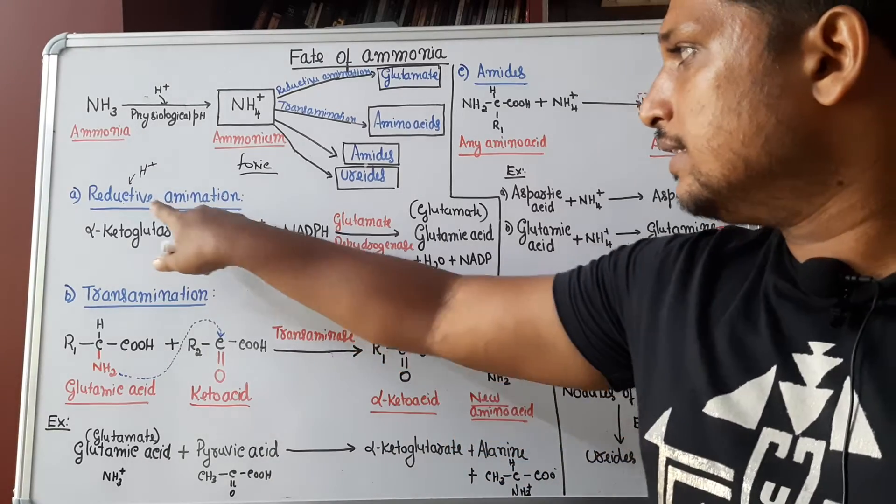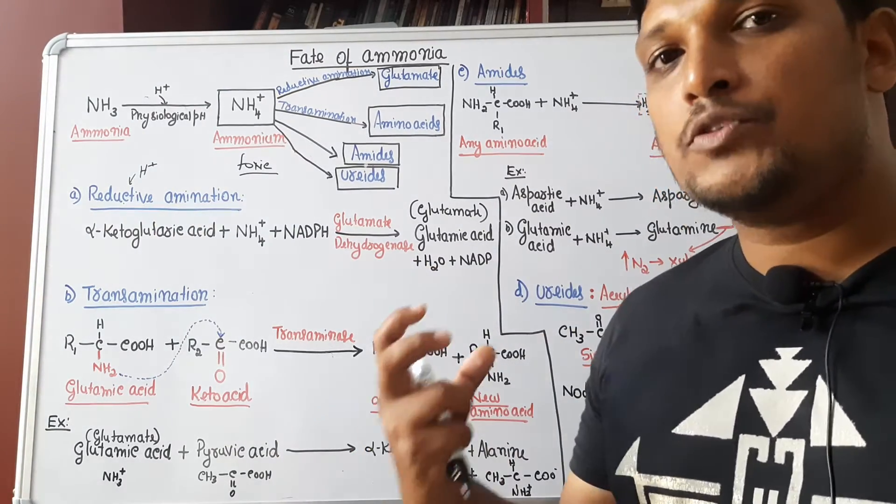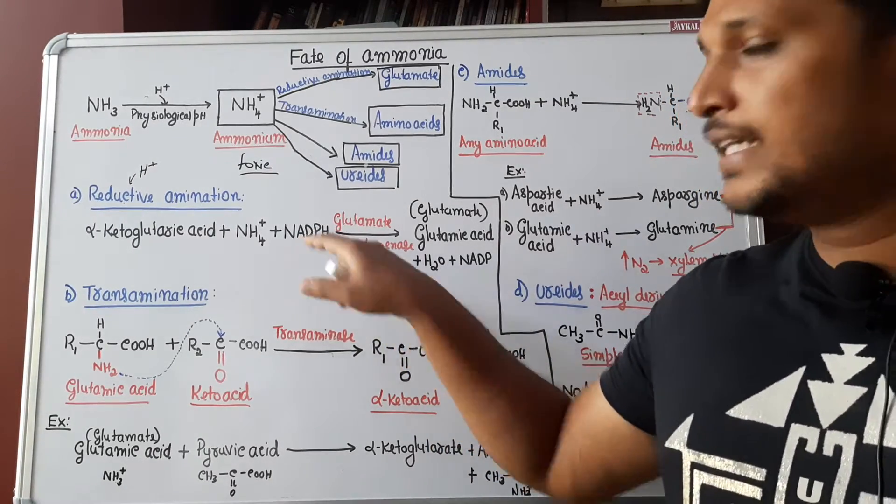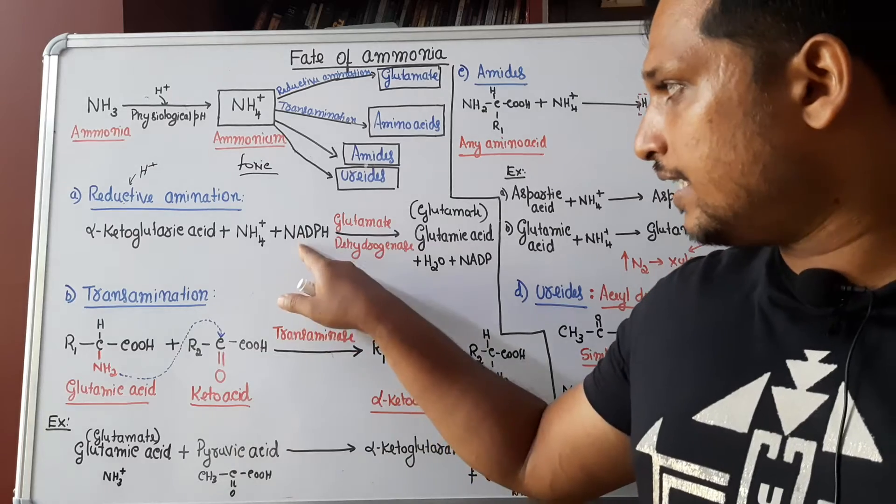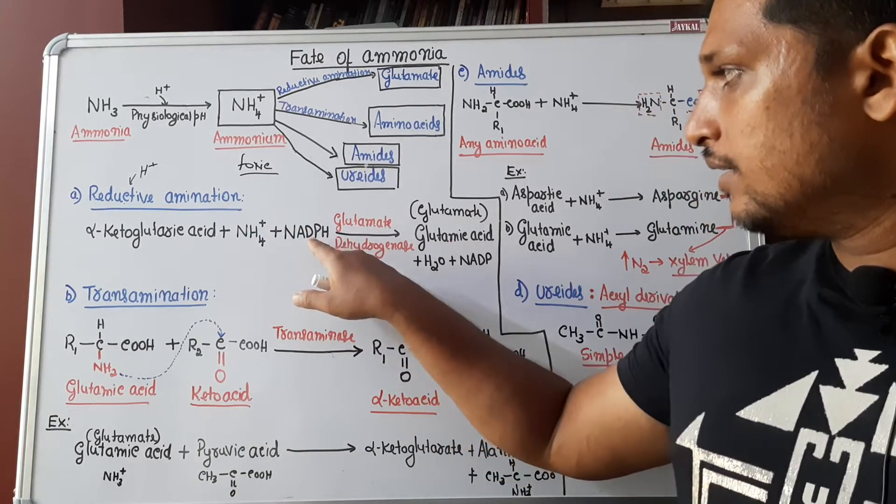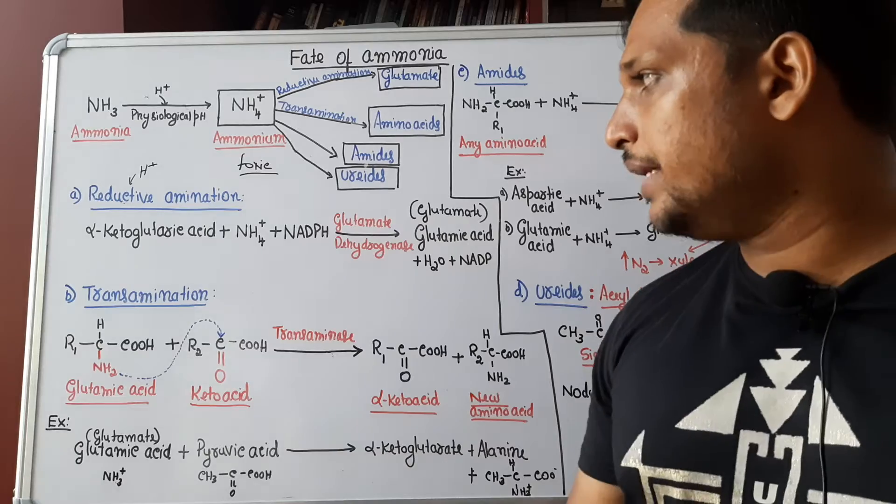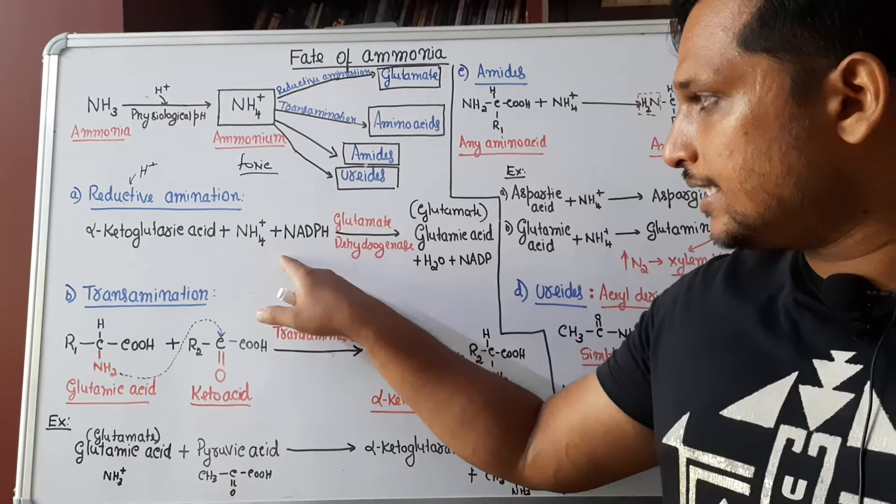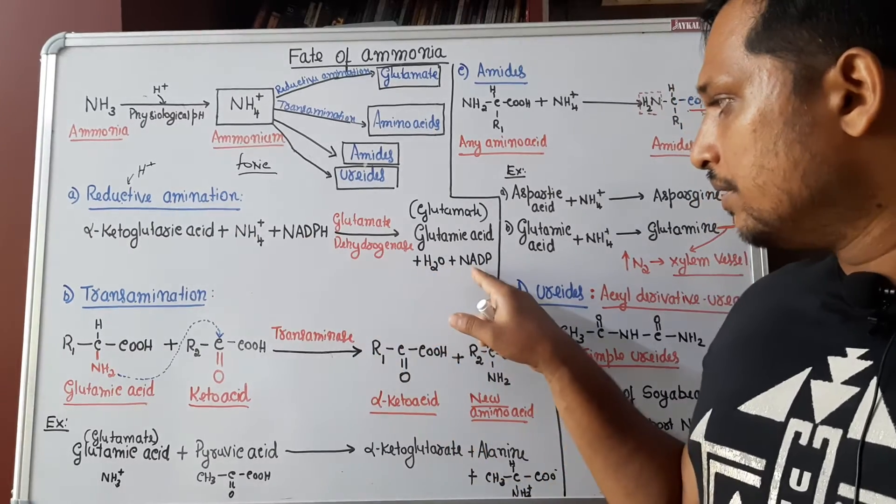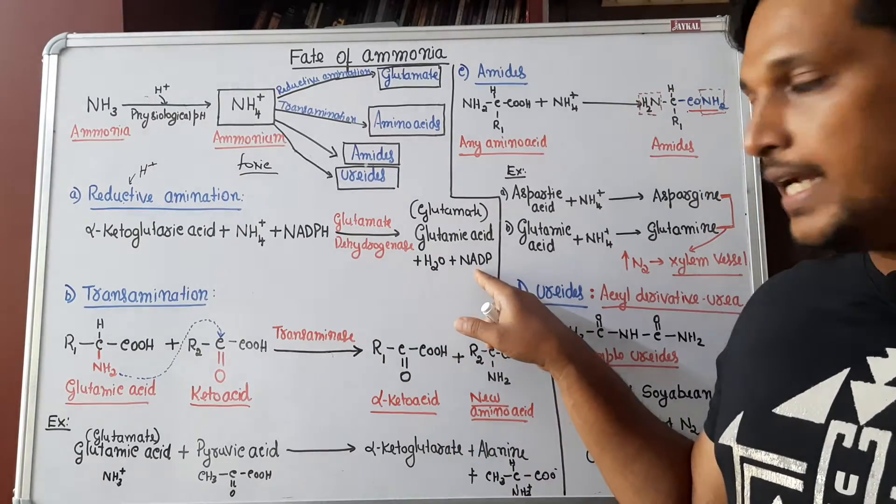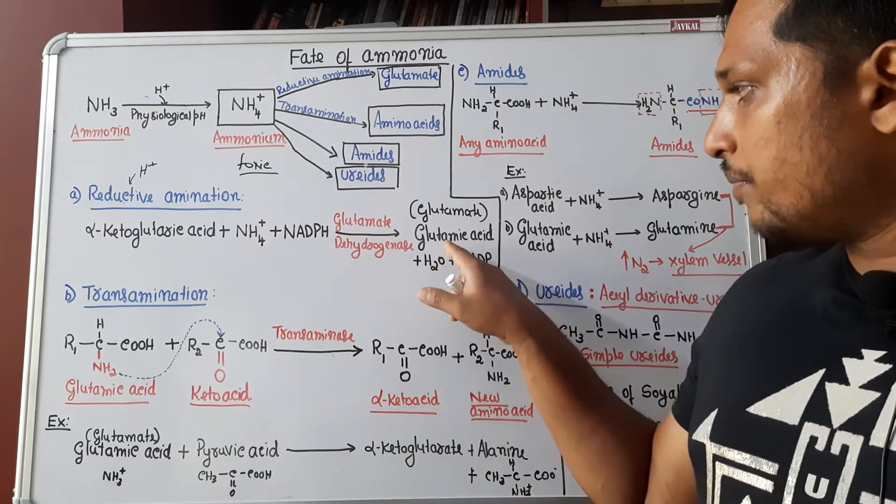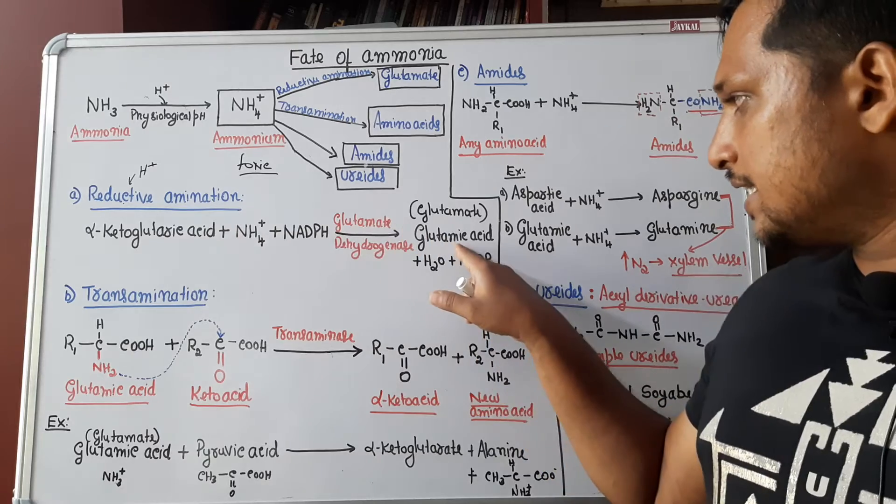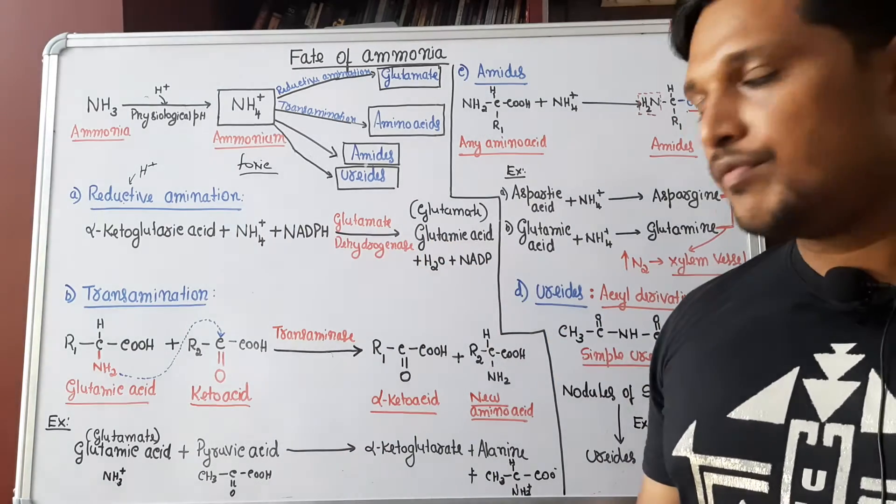Alpha-keto, then there is reduction. For reduction, we need one reducing power. One of the good reducing powers generated in plant is NADPH. So there is reduction, there is amination. It occurs in the presence of glutamate dehydrogenase. What happens? NADPH, since it is a reducing power, donates its hydrogen which is reduction, becomes reduced to NADP during which there is formation of glutamic acid. Alpha-ketoglutaric acid changes to glutamic acid and water is formed.